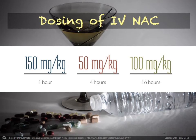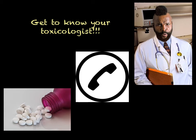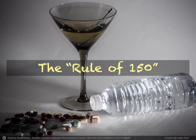The dosing of IV N-acetylcysteine is actually pretty easy to remember. You start by giving 150 milligrams per kilogram over one hour, follow this by 50 milligrams per kilogram over four hours, and then finish up with 16 hours of a 100 milligrams per kilogram infusion. At about hour 20, you'll be rechecking acetaminophen level and liver enzymes to see if an extended course is indicated.